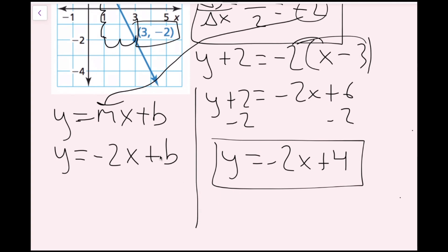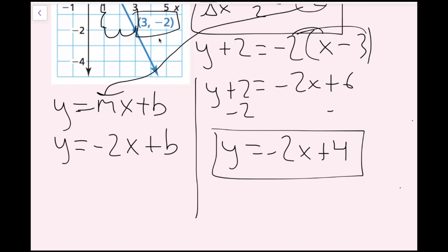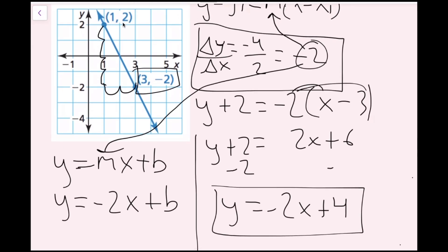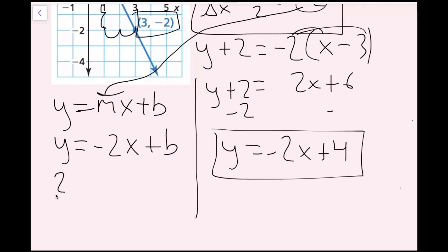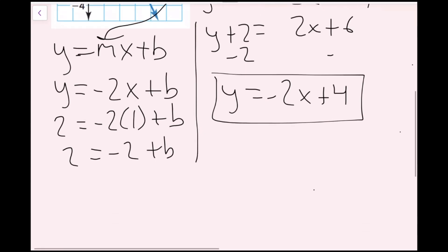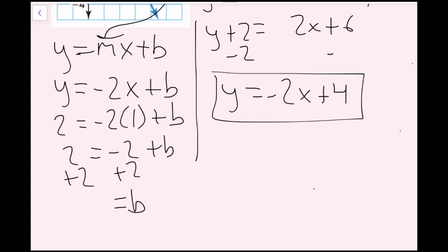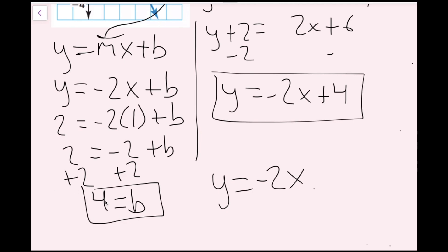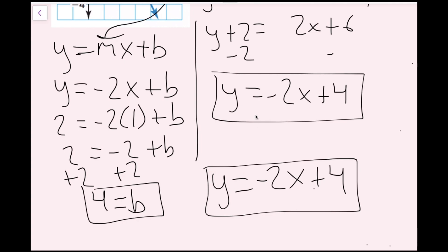Now I need to figure out what the y-intercept is. I can use any x-y pair on the line. I'll use (1, 2) — just to show that it doesn't matter which point you pick. I plug in x equals 1 and y equals 2: 2 equals negative 2 times 1 plus b, which gives negative 2. Adding 2 on both sides, I get b equals 4. So I have slope negative 2 and y-intercept 4, giving y equals negative 2x plus 4. As you can see, it's the same answer no matter which method you use.